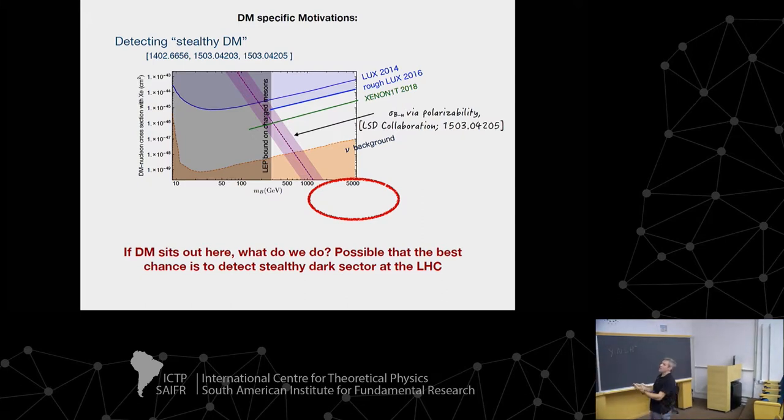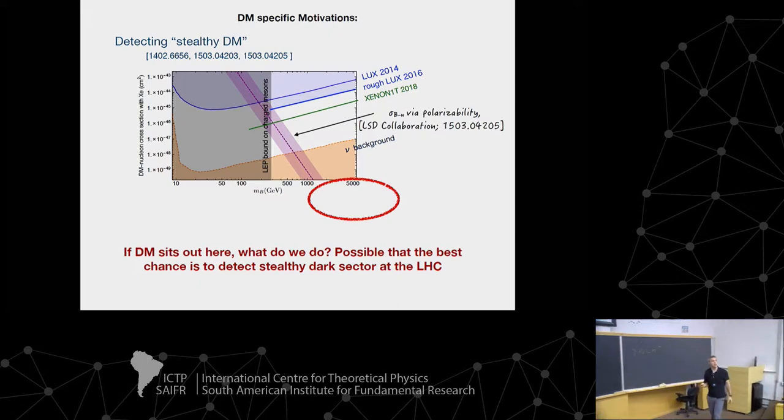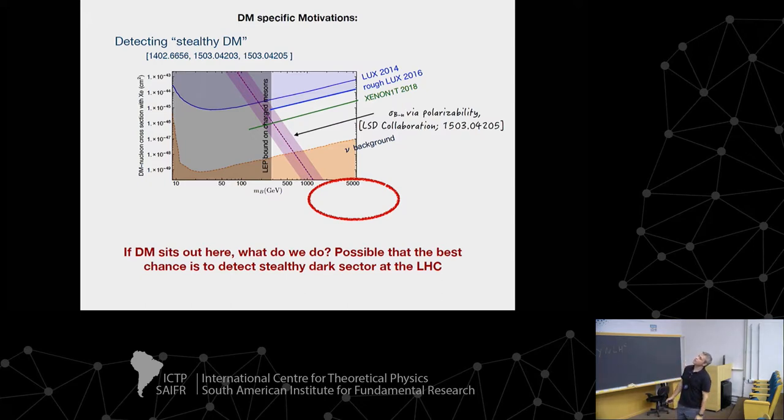This is one circumstance where the best chance to detect this idea is actually through the LHC. Now, I'm not proposing we're going to make five TeV states. That doesn't make sense. But remember our ladder, our spectrum. So if the dark baryon is here, the dark mesons could be hanging out down here. So that's our target. Seeing the dark mesons at the LHC is one of the few signatures that this kind of setup would have.